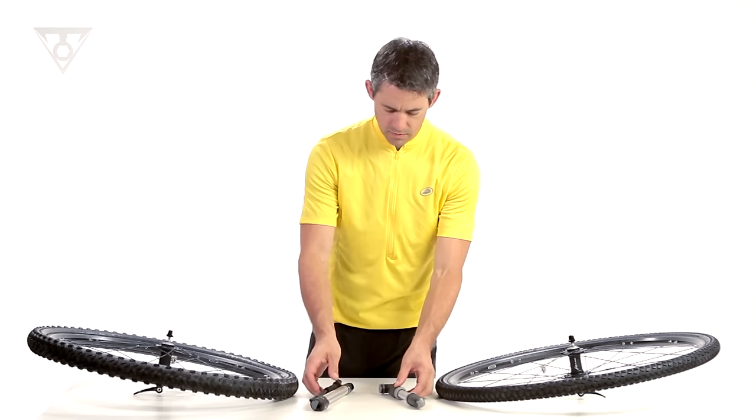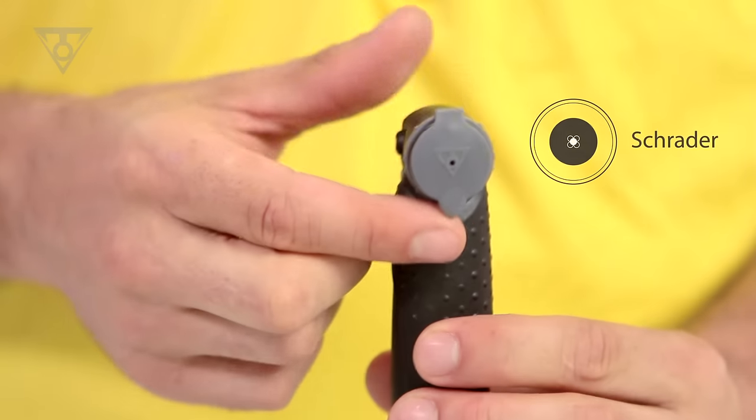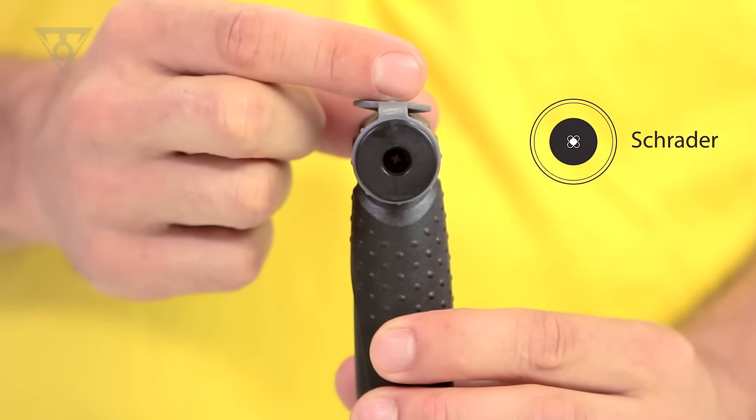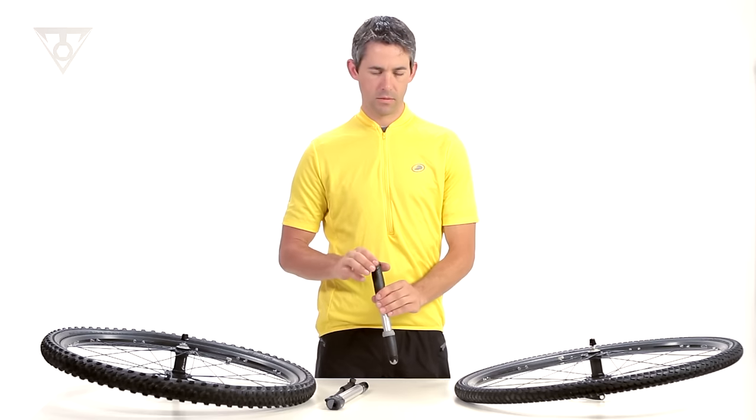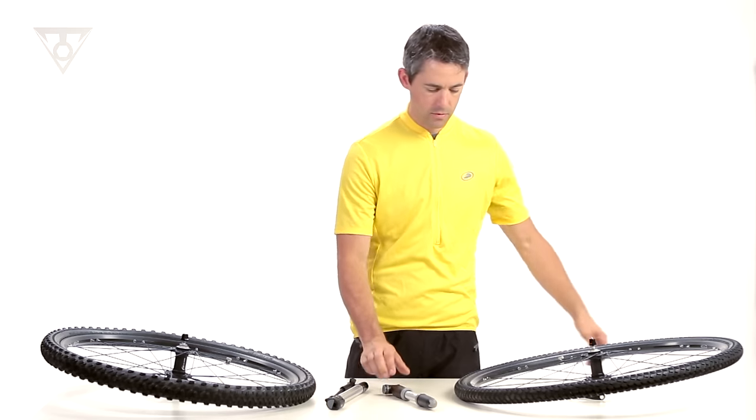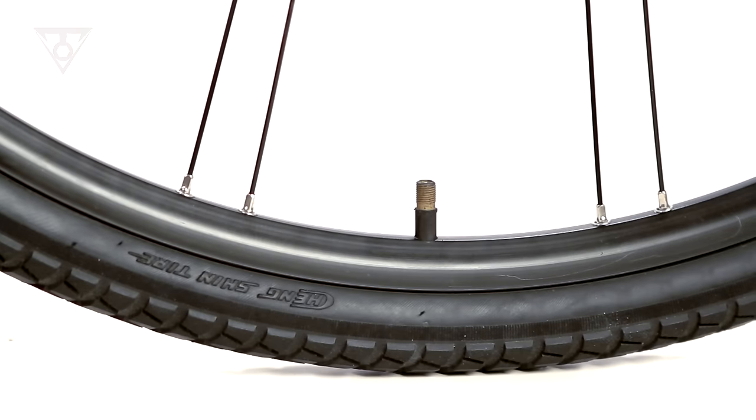First, identify your pump setup and tire valve type. If your pump head features a wider opening and plastic central pin, this is set up for a Schrader valve. A Schrader valve is similar to the valve on a car or motorcycle tire.